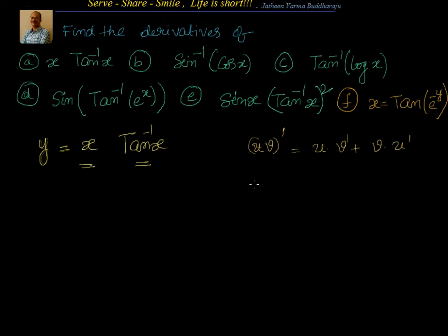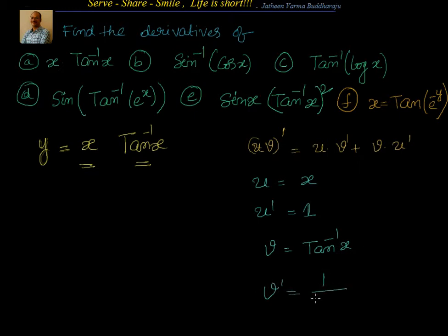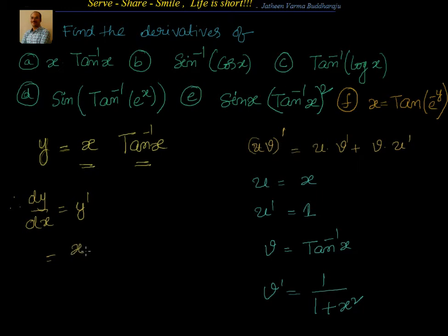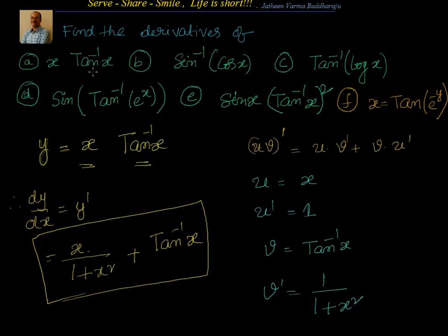Let's identify u and v. u = x, so u' = 1. v = tan⁻¹(x), so v' = 1/(1 + x²). Substituting into the product rule: dy/dx = u·v' + v·u' = x · (1/(1 + x²)) + tan⁻¹(x) · 1, which gives x/(1 + x²) + tan⁻¹(x).